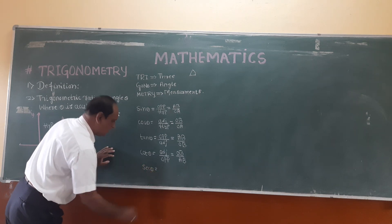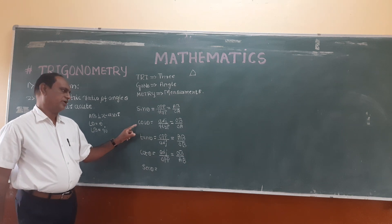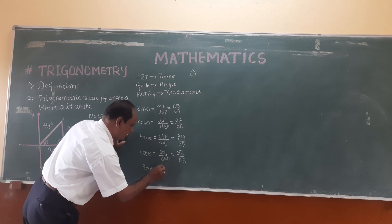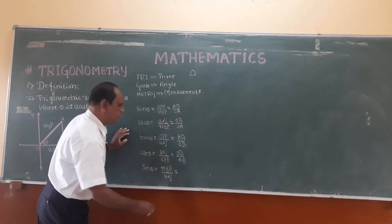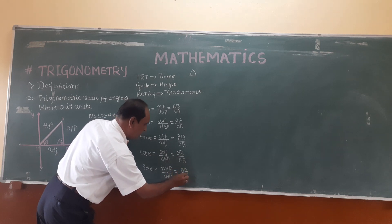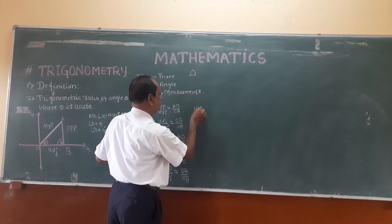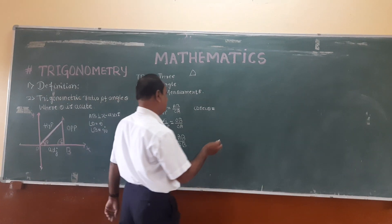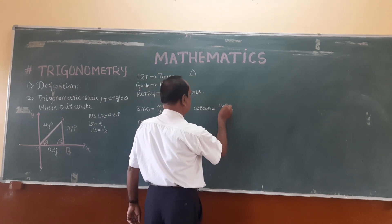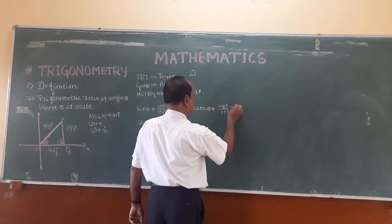Sec theta is the reciprocal of cos theta. Cosec theta is equal to the reciprocal of sin theta. Sin theta means hypotenuse divided by opposite, so cosec theta equals OA divided by AB. We get six trigonometric ratios in total.